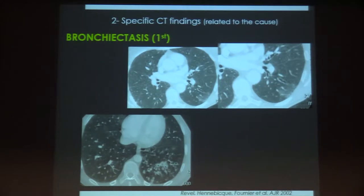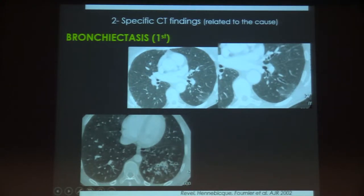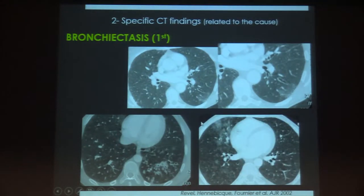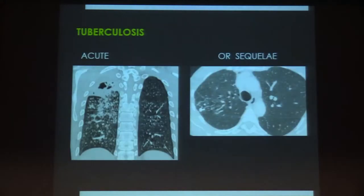The second category of CT findings are those related to the cause of bleeding. The first and most common cause of severe haemoptysis is bronchiectasis. Examples are shown here — a small amount of ground glass indicating the site, left lower lobe bronchiectasis, and another case with bronchiectasis in the middle lobe.